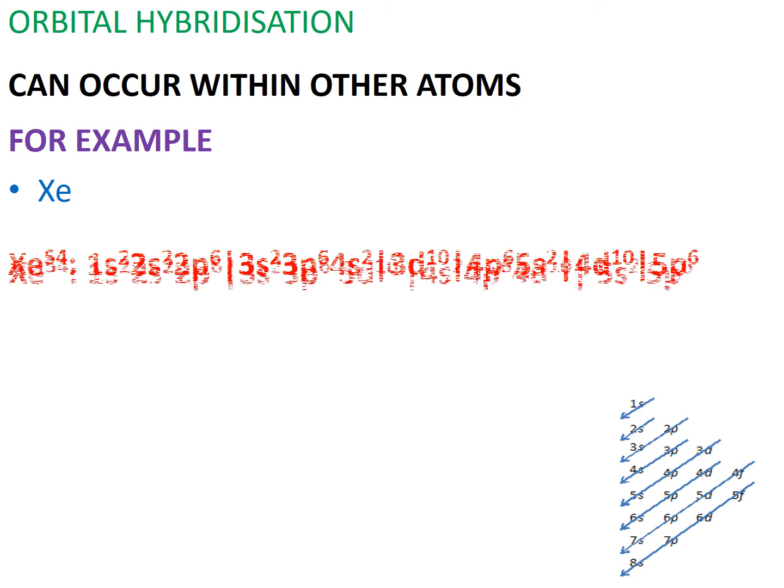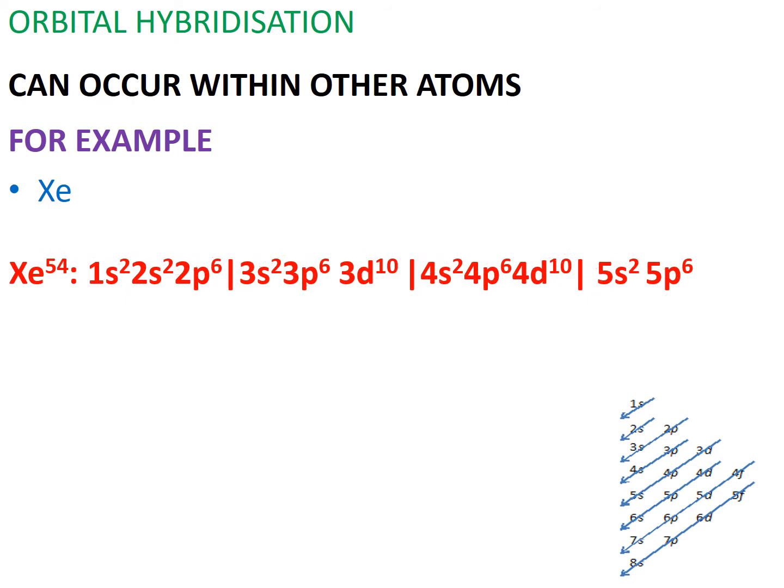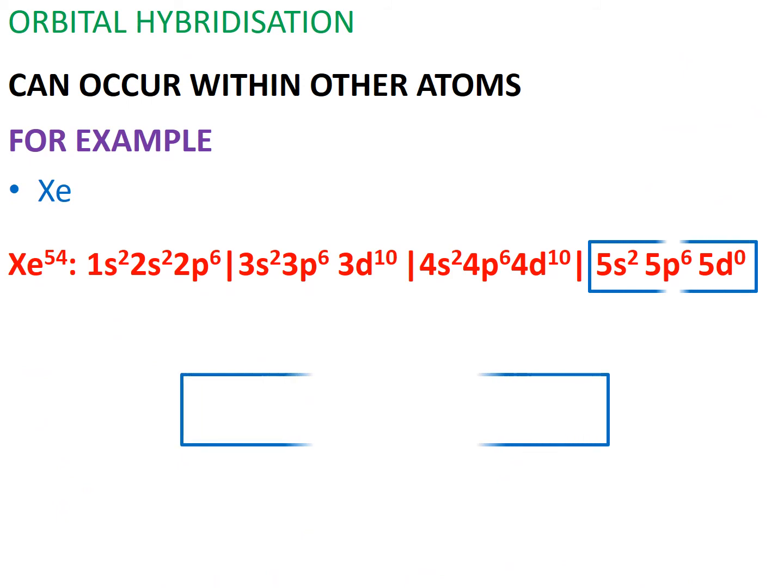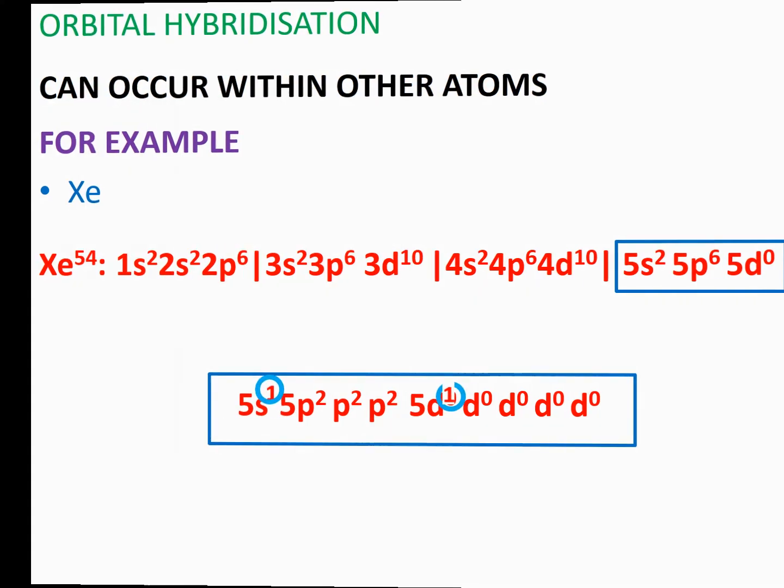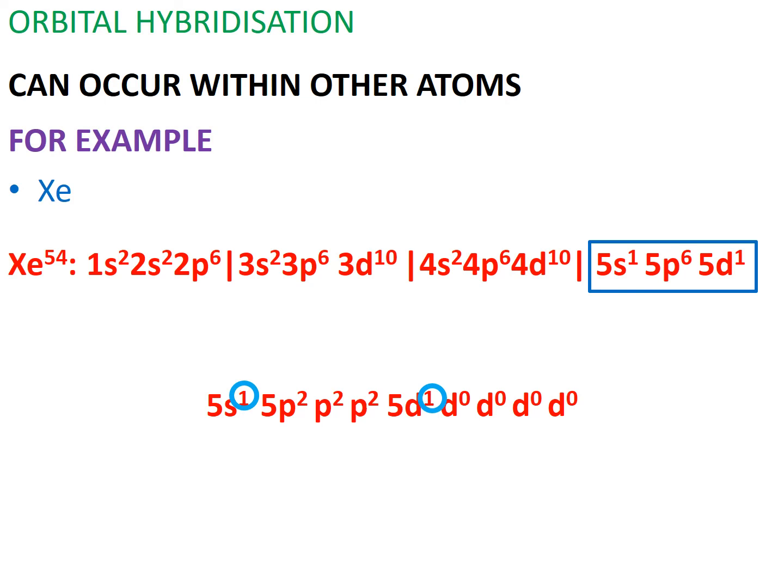However, if we transfer enough energy onto xenon, enough energy could make it possible for xenon to be able to form two covalent bonds. With enough energy, we could also further promote an electron from a p orbital into a d orbital, and thus make it possible for xenon to form four covalent bonds.